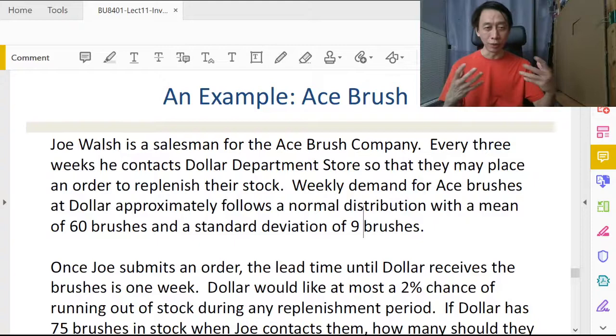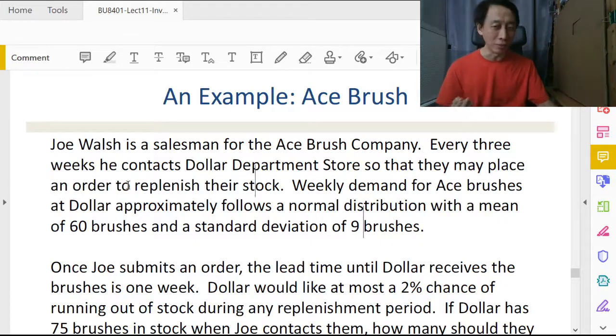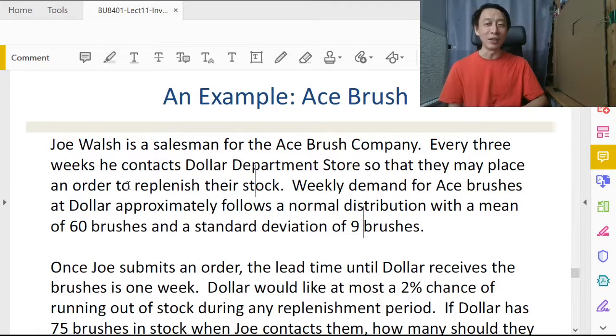Every three weeks he contacts Dollar Department Store to know the inventory level. That sounds like saying that Joe Walsh is managing Dollar Department Store's inventory on a periodic review basis. Every three weeks he does that. Why is he doing that? Why doesn't he just on a daily or hourly basis know the inventory?